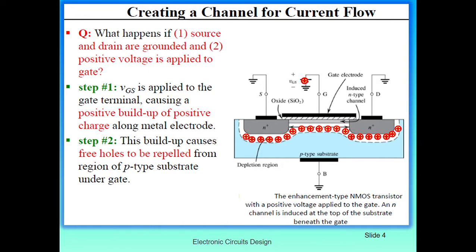So how can we create the channel for current flow between the source and drain terminals? I will explain it in six steps. The question is: what happens if source and drain are grounded and a positive voltage is applied to the gate? The answer is this will form the inversion layer or the conduction channel between the source and drain terminals. I will explain how in six different steps.